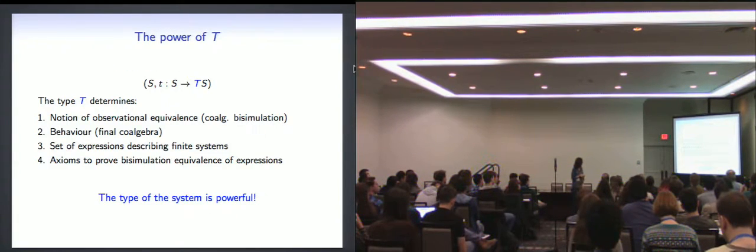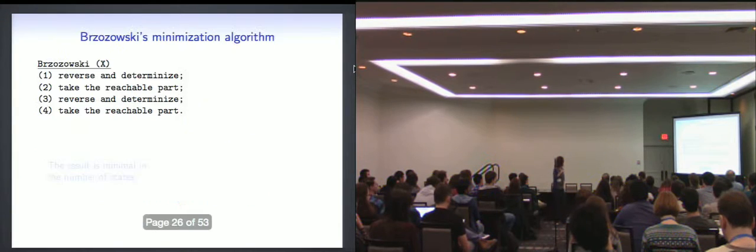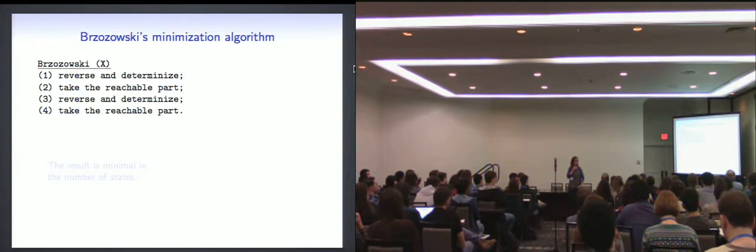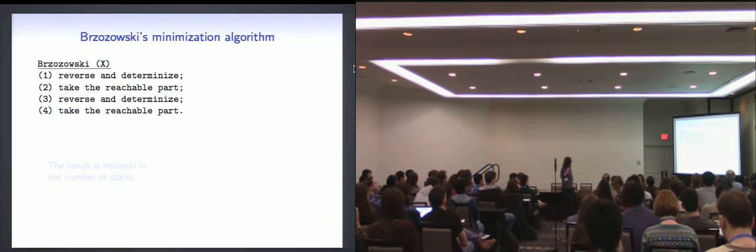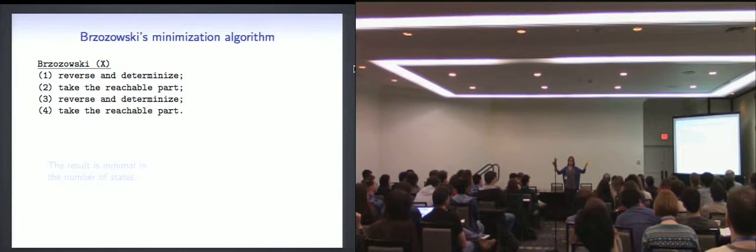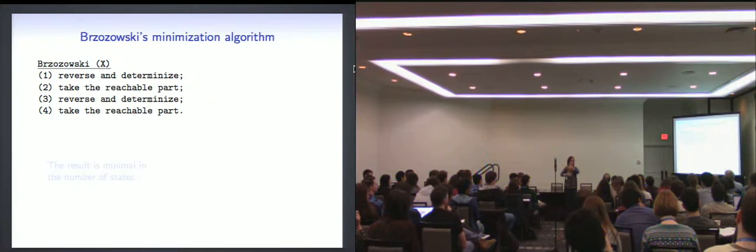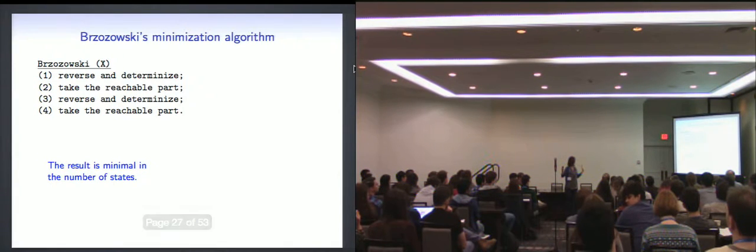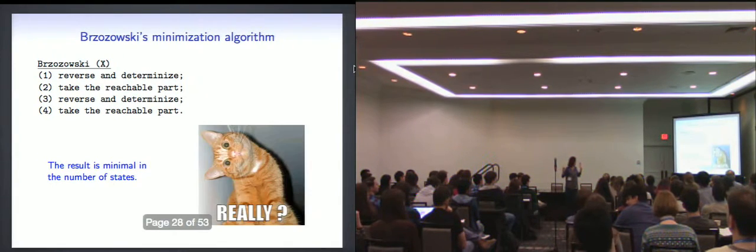And now what I want to show you is that the type is also enough to actually parameterize certain algorithms. So here's one algorithm. I don't know, how many of you have seen Brzozowski's minimization algorithm? A few. Okay, not too many. That's good. So here's an algorithm that Brzozowski came up with in the 80s to minimize an automaton. You take an automaton, possibly non-deterministic, doesn't really matter. You reverse all the arrows in your automaton and you swap initial and final states. And then you determinize the thing you obtain. And then you take the reachable part. And then you do the same again. And magically, the result is minimal in the number of states.